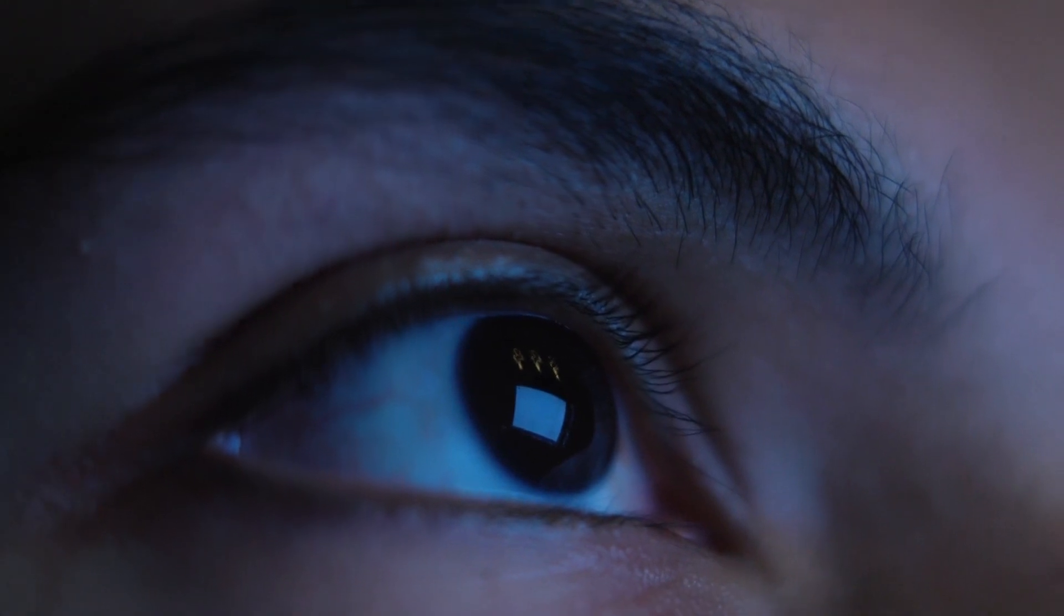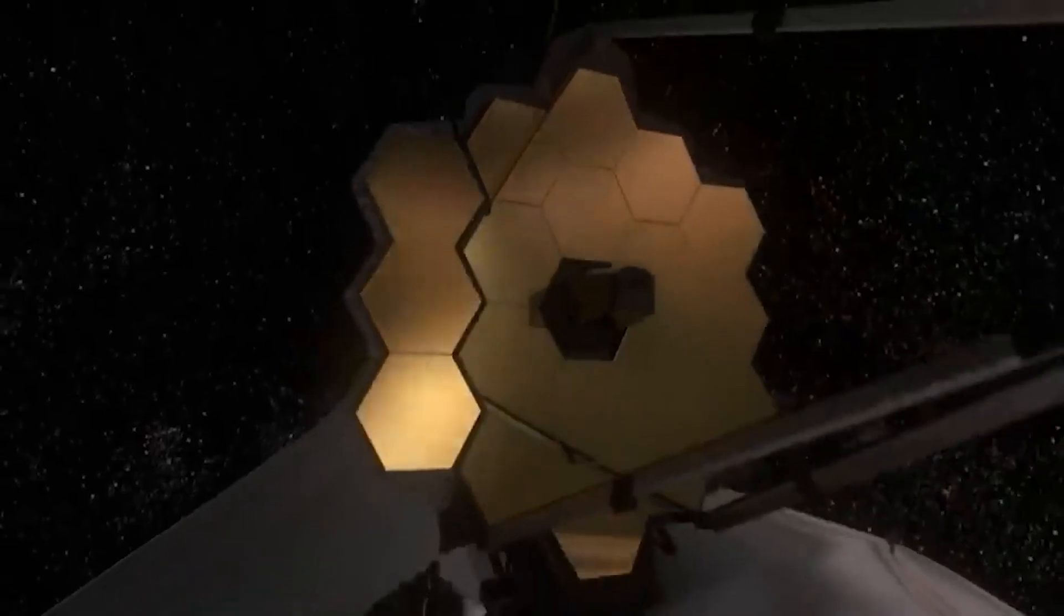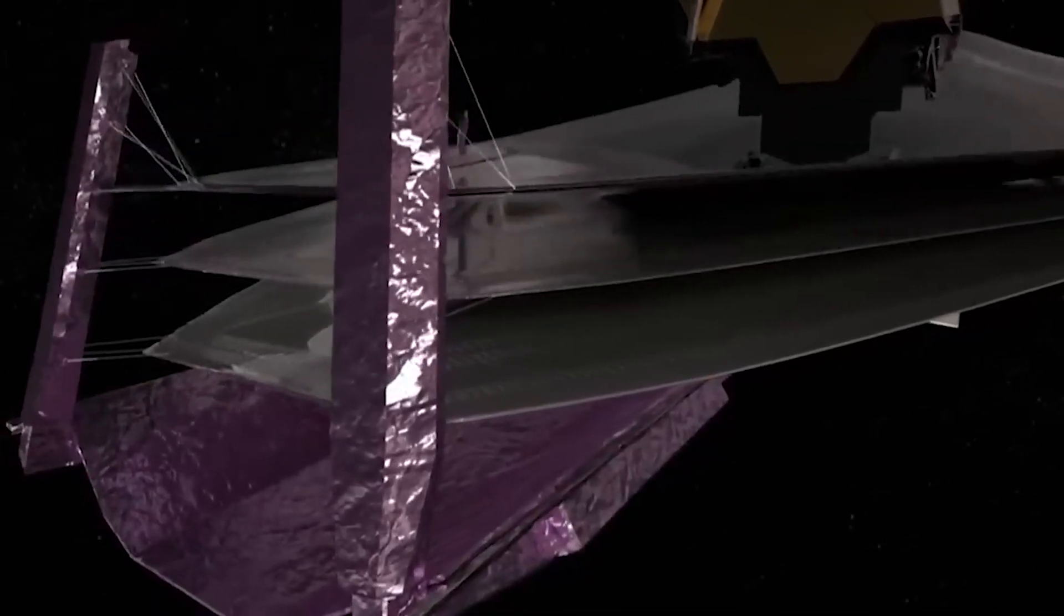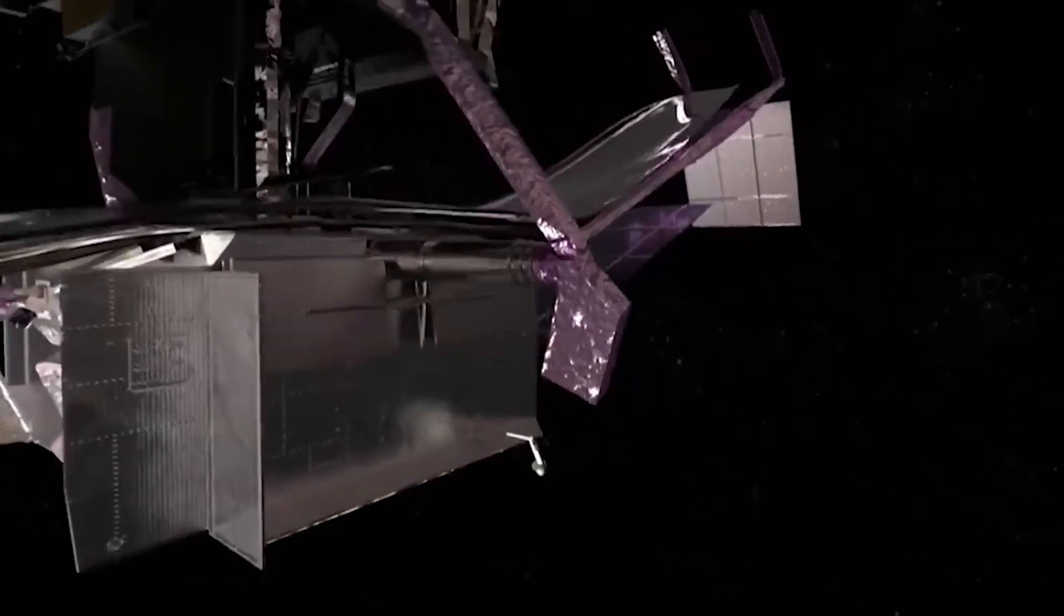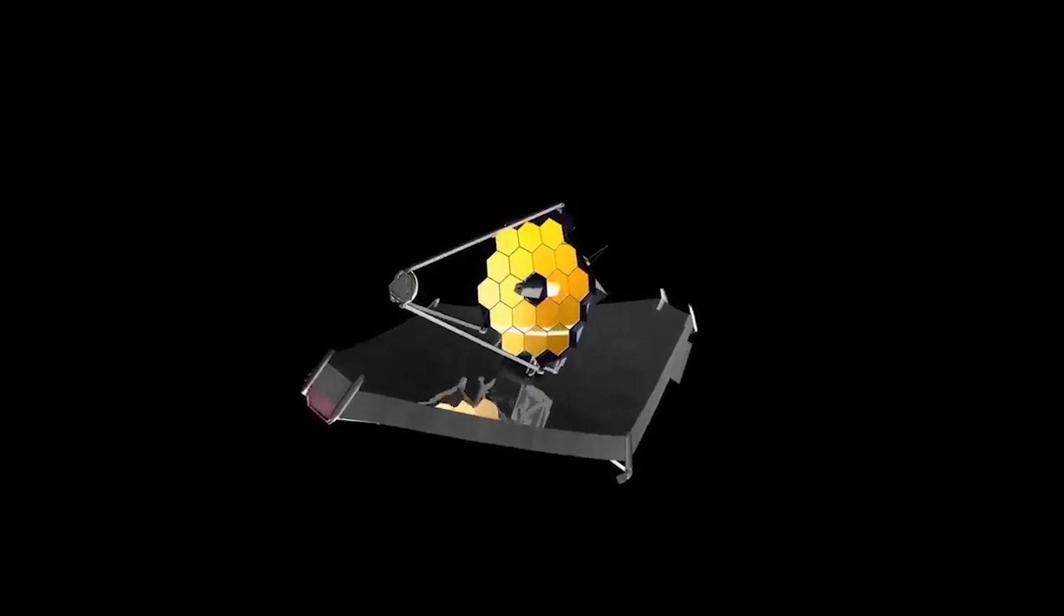Infrared is invisible to our eyes, but the James Webb Telescope uses infrared censoring to capture light as far as 13 and a half billion years in our cosmos. The telescope has 18 gold-plated mirrors that are expanded into space to absorb light.